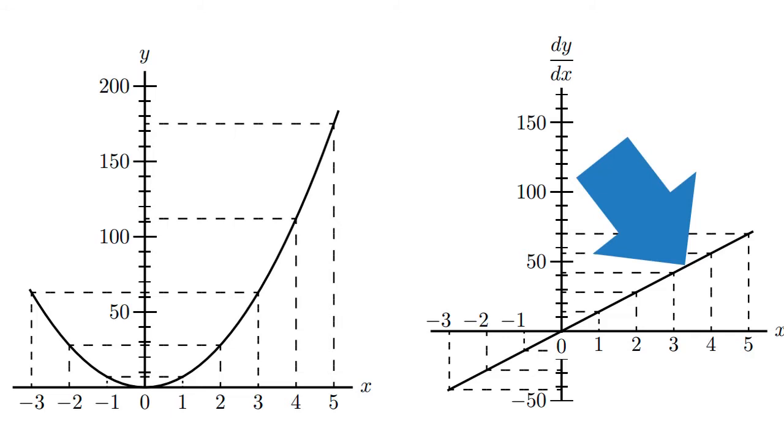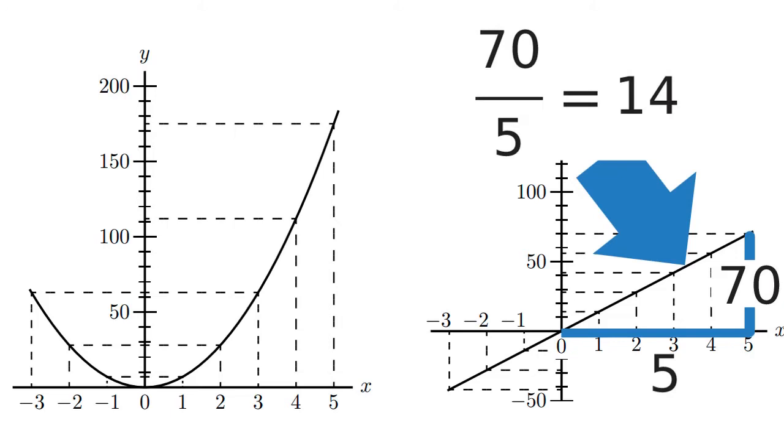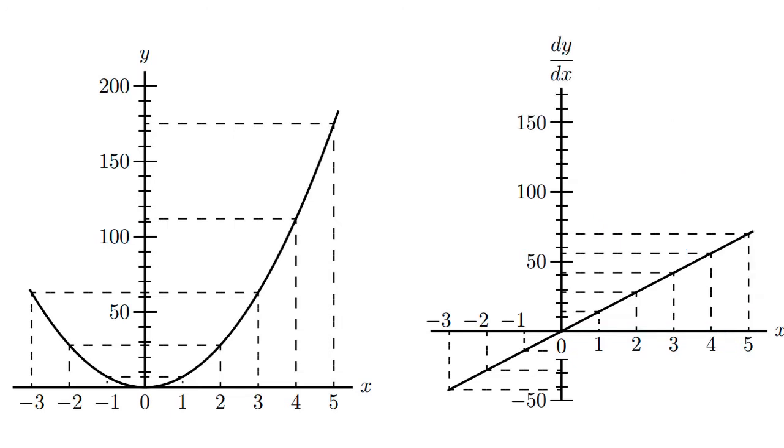So our derived curve, you work out the slope. It's a straight line. It's 14x. And our original curve is y equals 7x squared. The height of our new curve is proportional to the slope of the original curve.